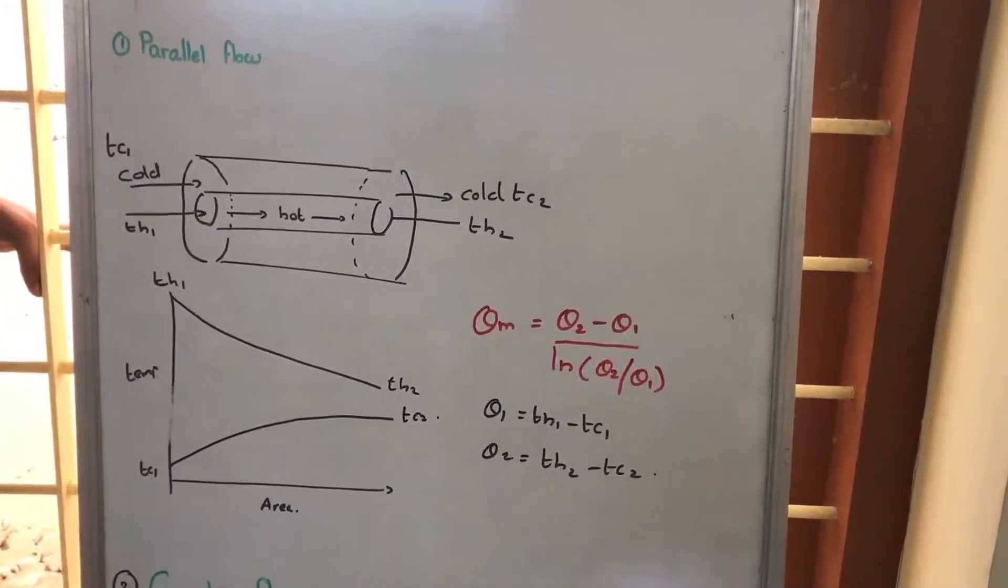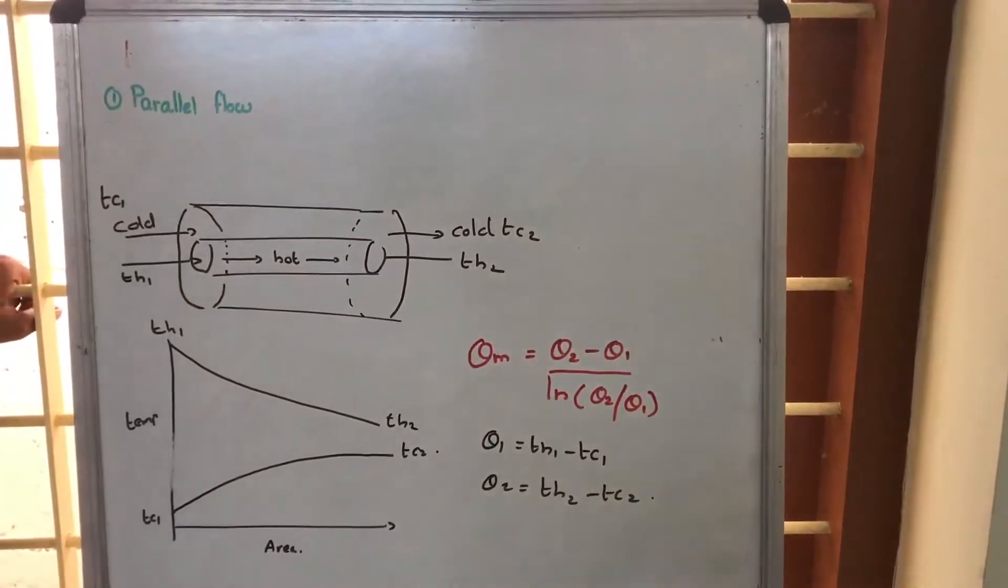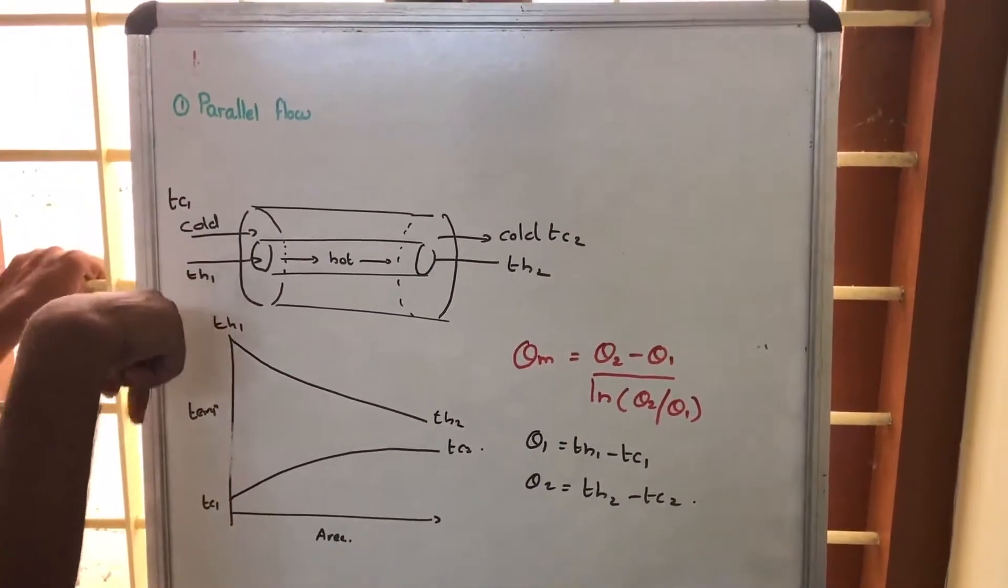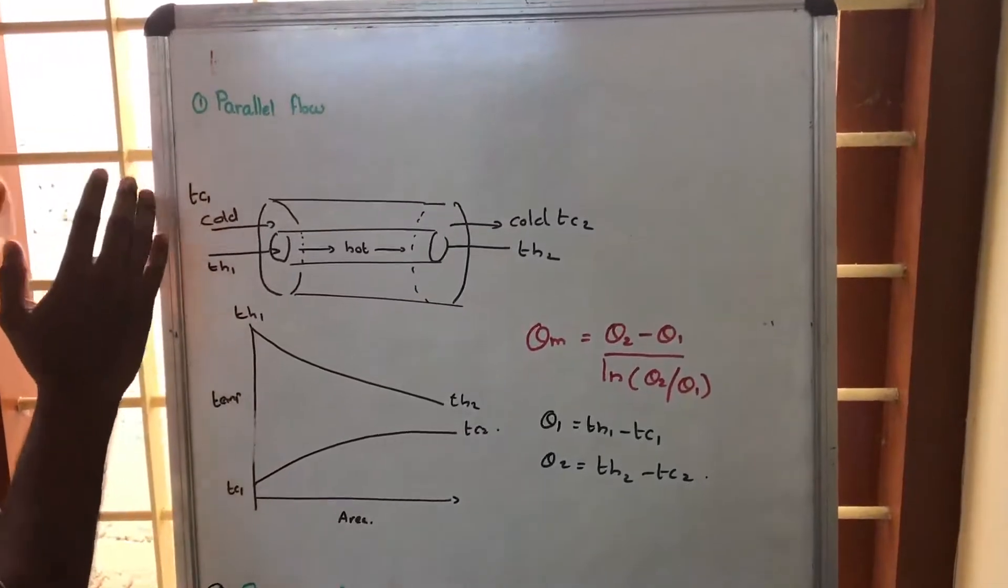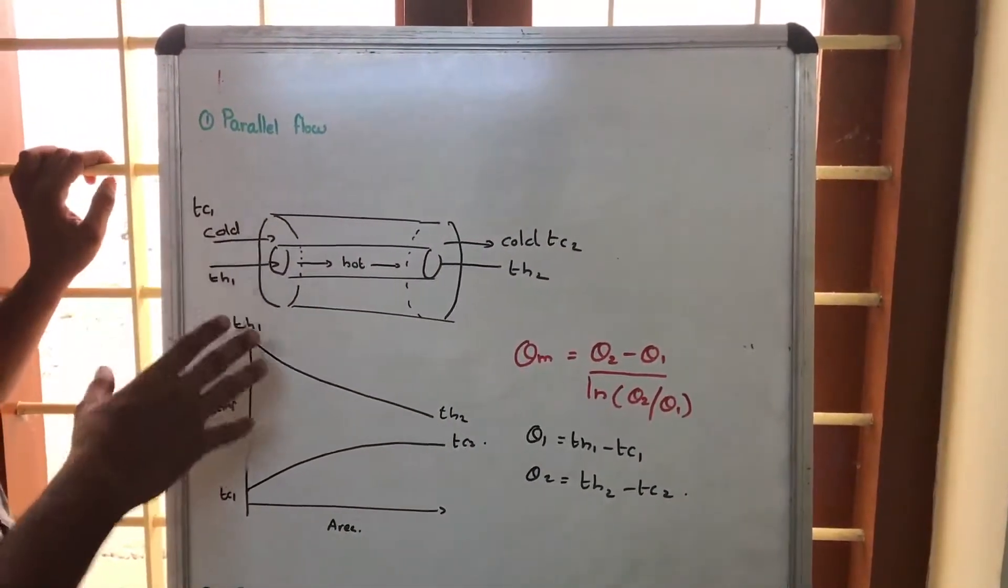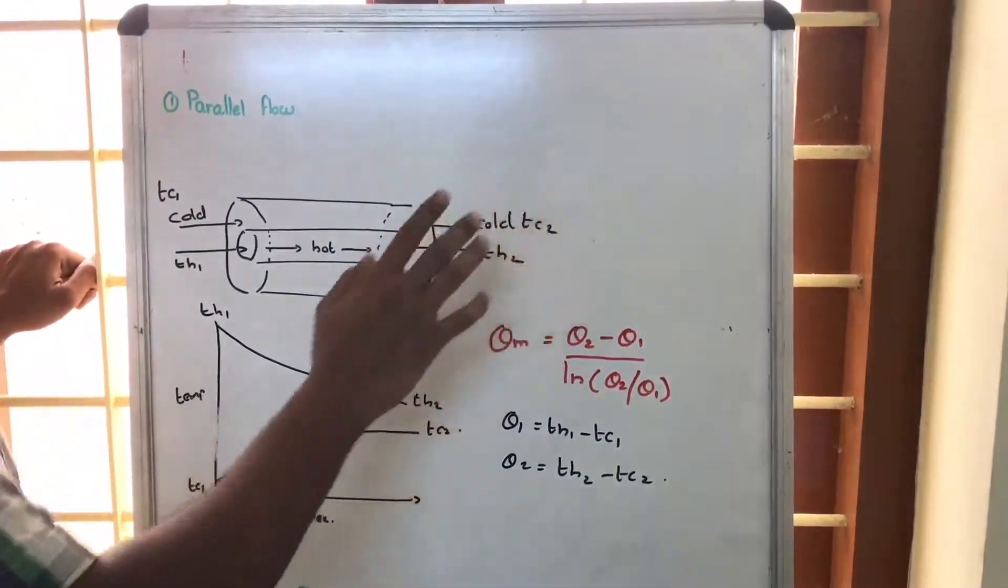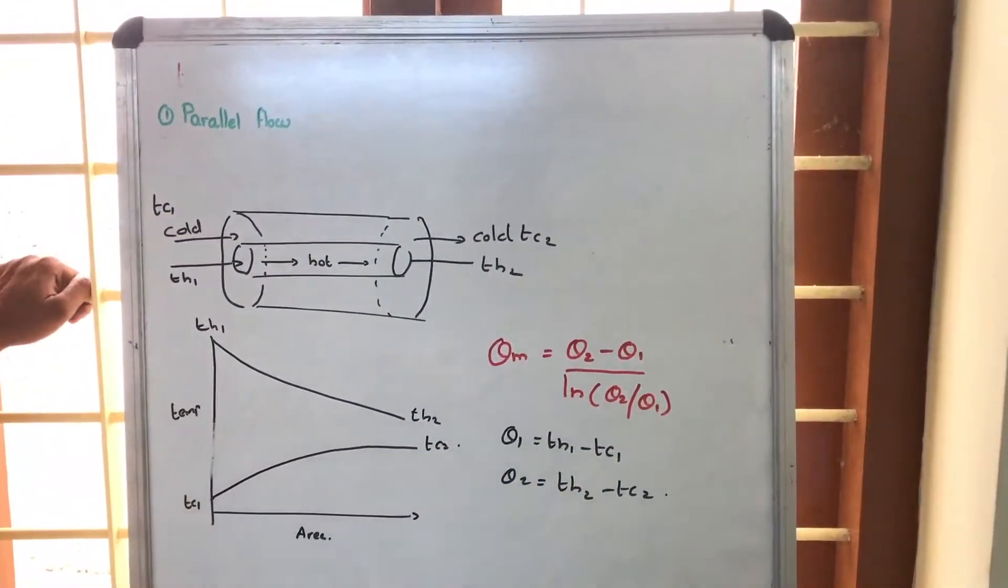And here theta 1 is equal to the difference between the entrance, on the left side it is TH1 minus TC1 so that difference is called theta 1, and theta 2 means TH2 minus TC2, that is theta 2.